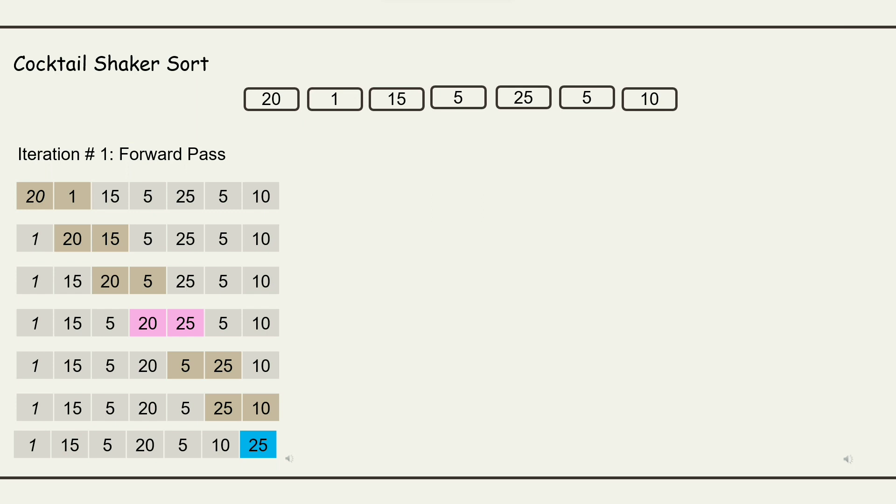20 and 1. 1 is less than 20, so they need to swap. 20 and 15. 15 is less than 20, so they need to swap. 20 and 5. 5 is less than 20, so they need to swap. 20 and 25. 25 is greater than 20, no swapping. 25 and 5. 5 is less than 25, so they need to swap. 25 and 10. 10 is less than 25, so they need to swap.